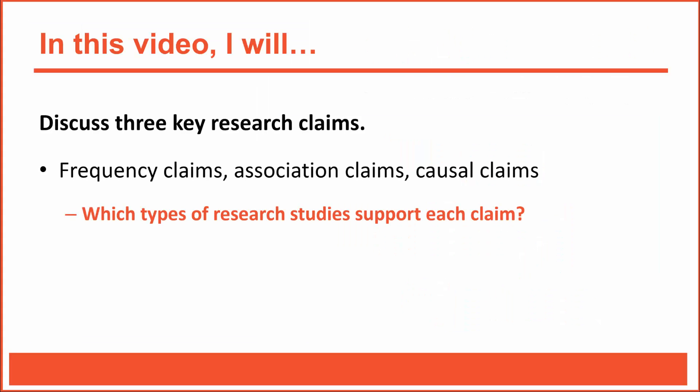In the last video I mentioned that this is an important chapter because it introduces a framework for evaluating all research based on three key types of research claims and four key types of validities. In this video I'll focus on those three key research claims: frequency claims, association claims, and causal claims. A claim is just an argument someone is trying to make, and when researchers make a claim they need to back it up with the right kind of research study. Let's get to work.